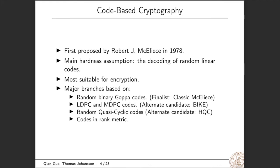We know code-based constructions are most suitable for encryption and we have different branches, for instance based on random binary Goppa codes. The representative is classic McEliece, which is a finalist in the NIST post-quantum standardization project. We can also use LDPC and MDPC codes. We have an alternate candidate in the NIST project, BIKE. And we can also use random quasi-cyclic codes. We have HQC, which is the main target of this paper. We can also use codes in rank metric. So this branch is also called rank-based cryptography.